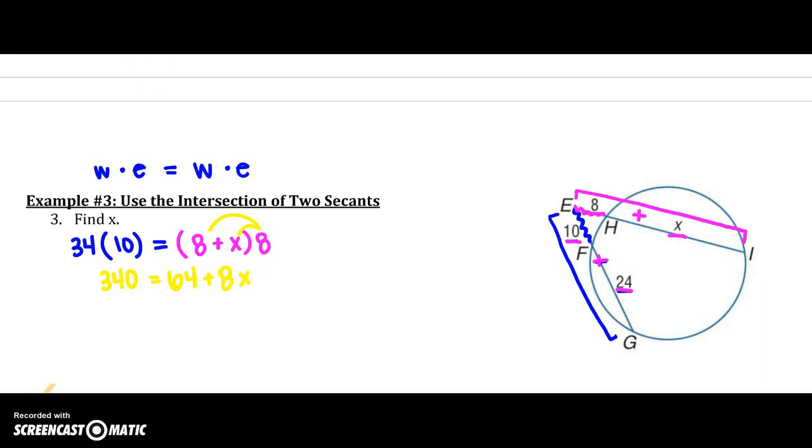So, I'm going to subtract 64 over here, and I'm going to get 8X equals 276. Divide both sides by 8, so my X is going to equal 34.5.